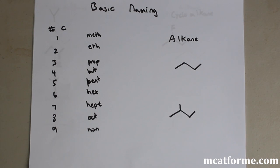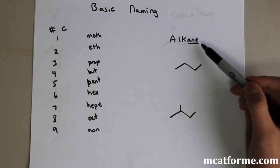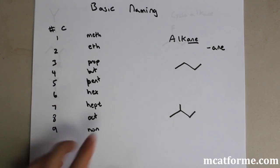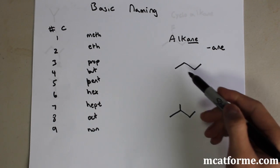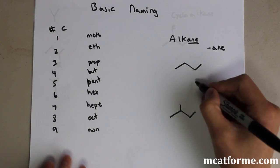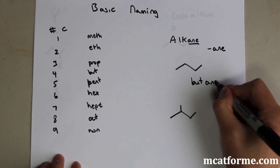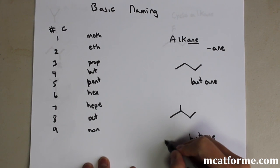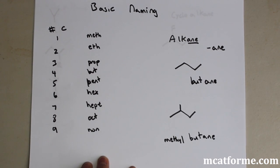We're going to go over all the functional groups we need to know for the MCAT. The first one is alkane. Before that, always look at the ending — it's always going to be the ending of that parent compound. For alkane, the ending is '-ane'. So for a four-carbon molecule, the prefix is 'but' and the suffix is '-ane', giving us butane. Similarly, a four-carbon molecule with an extra methyl group becomes 2-methylbutane.